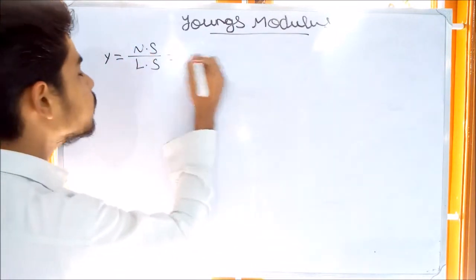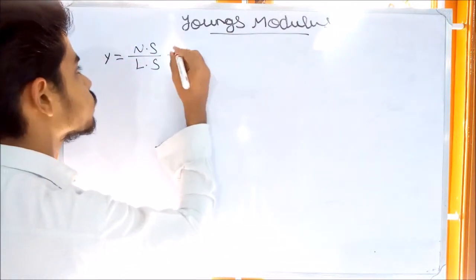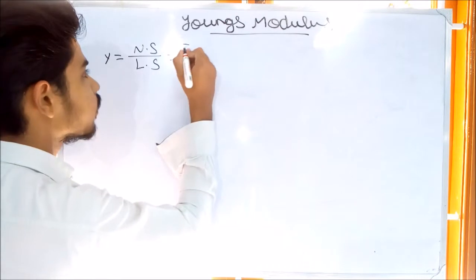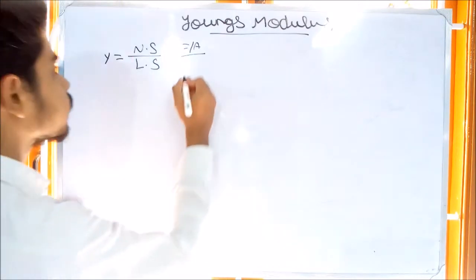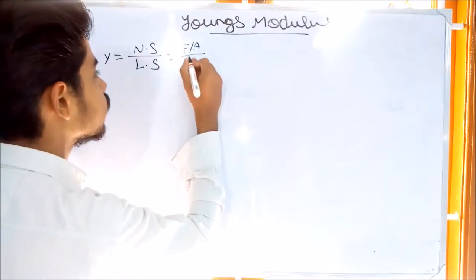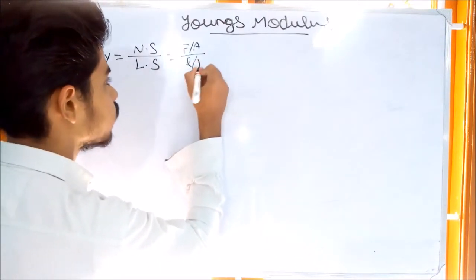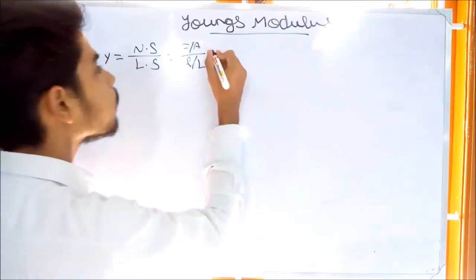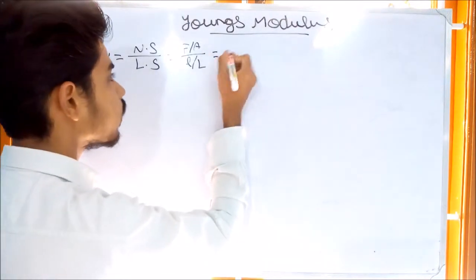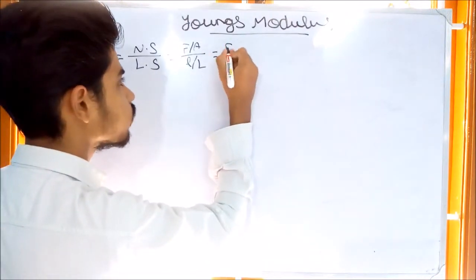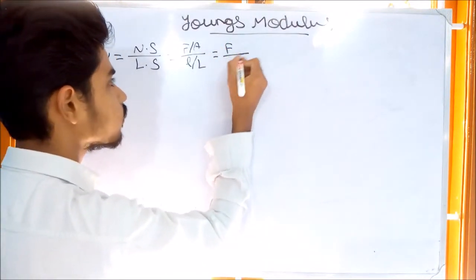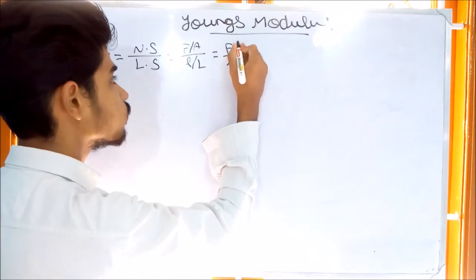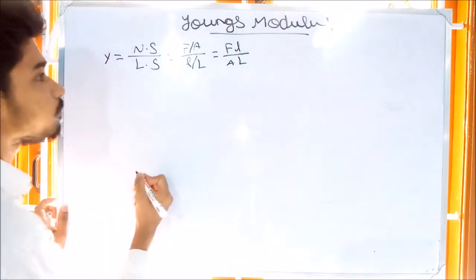If you want to talk about the formula for normal stress divided by longitudinal strain — normal stress is F divided by A, and longitudinal strain is delta L divided by L.